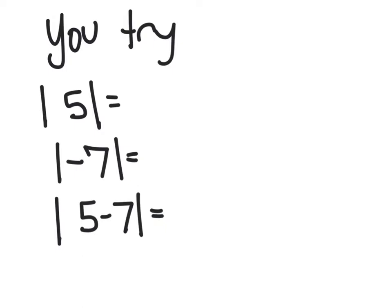All right, the absolute value of five is just five. It's five units away from zero. Negative seven, negative seven is seven units away from zero. And then finally, five minus seven, we evaluate inside the absolute value first. So this is the absolute value of negative two, which is equal to two. So just notice anything that we have negative inside these absolute value bars ends up becoming positive.